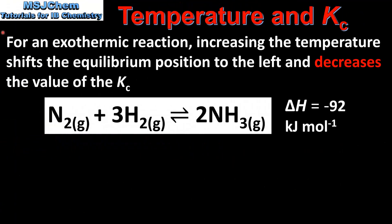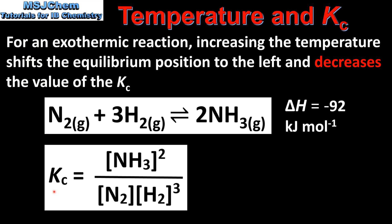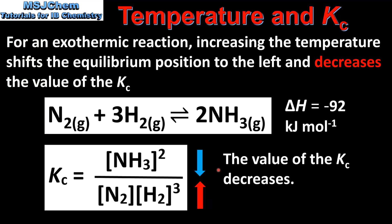Next we look at the effect of temperature on the value of the equilibrium constant Kc. For an exothermic reaction, increasing the temperature shifts the equilibrium position to the left and decreases the value of Kc. Here we have the equilibrium constant expression for the Haber process. When the equilibrium position shifts to the left, the value of the numerator decreases and the value of the denominator increases, therefore the value of Kc decreases.